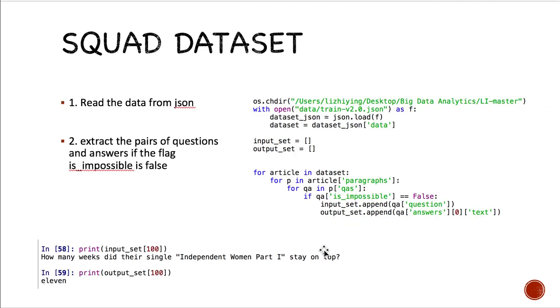And this is what we do. We first read the data from the JSON file, and we extract the pairs of questions and answers if the flag is impossible or is false.